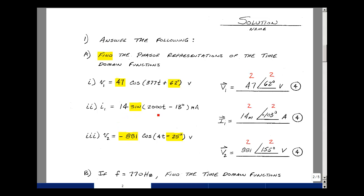The current I1 is equal to 14 times the sine of 2000t minus 13 degrees milliamps. Our phasor representation is based on using a cosine function, so I need to convert the sine to a cosine. That's simply taking the value of the angle and subtracting 90 degrees. The magnitude is 14 milli — you can put the milli here or at the end with the amperes. The phase angle is minus 13 minus 90, or minus 103 degrees. This was worth four points; I gave partial credit for the magnitude and the angle, two points apiece. Also take one point off if you don't include the units.